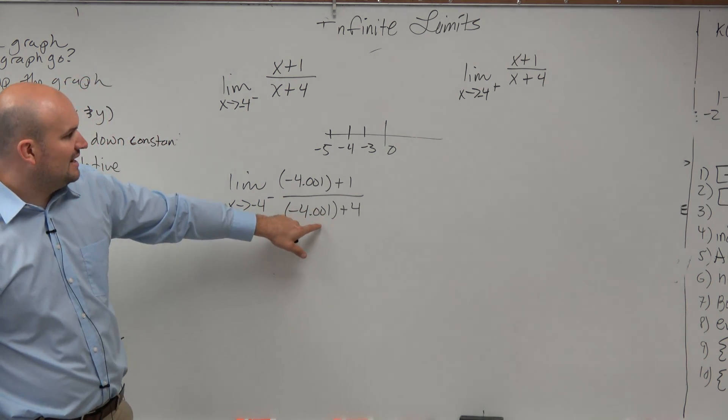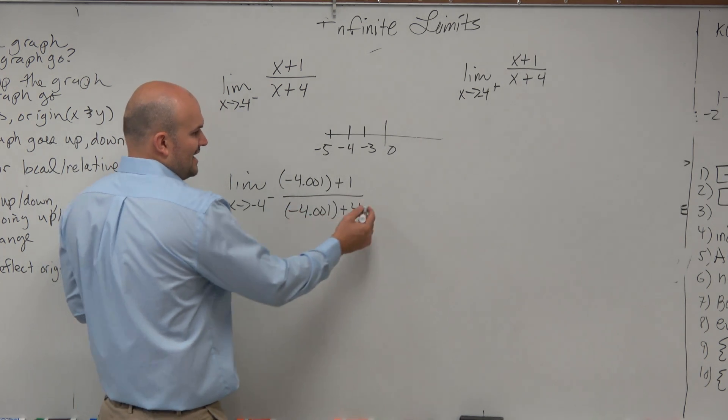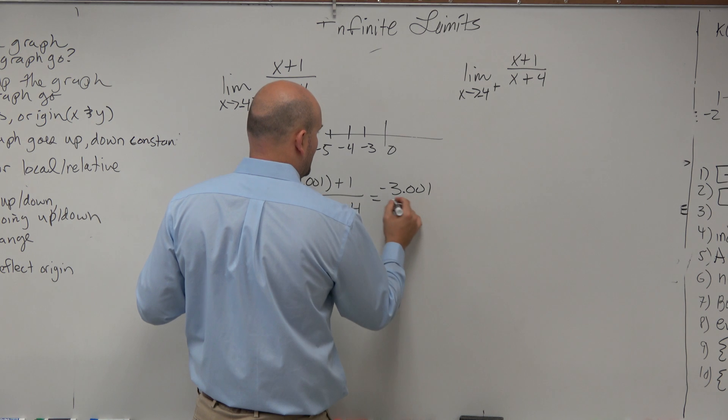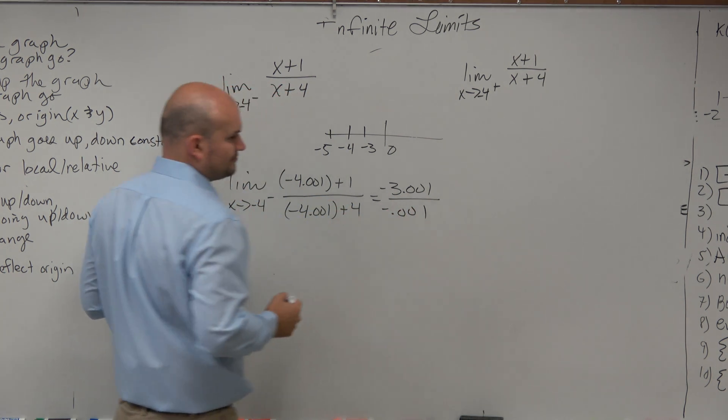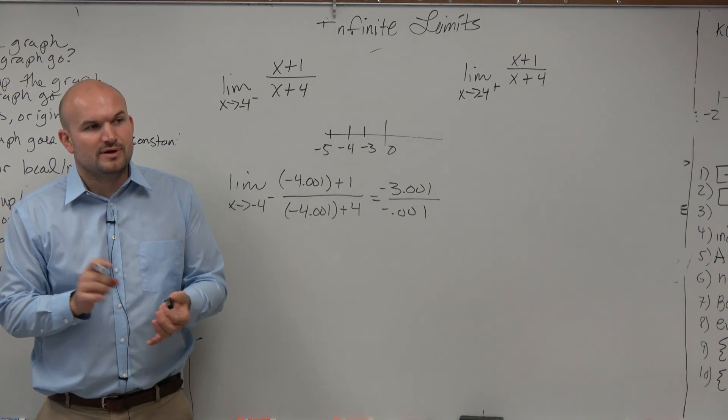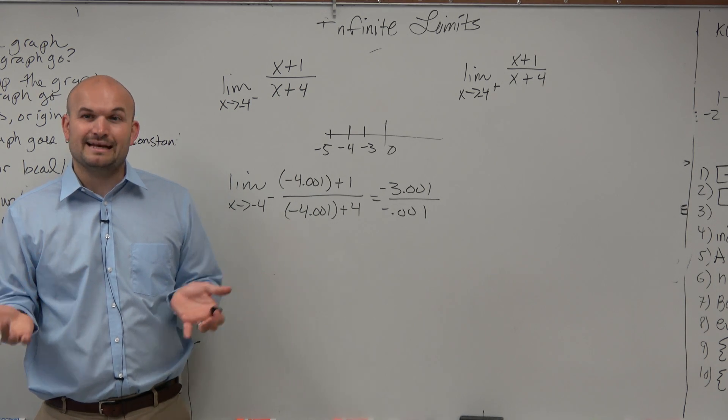So when you combine these now, you're left with negative 3.001 over negative 0.001. Now, I'm going to tell you guys, we don't really care actually what the number is, because you could have arbitrarily picked any number. So actually, I don't even care what those values are.